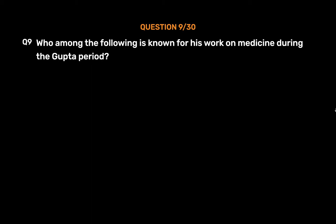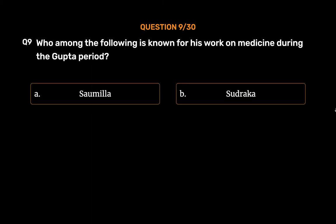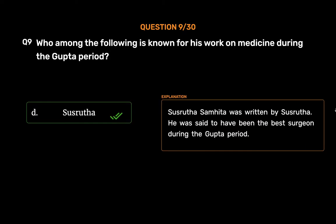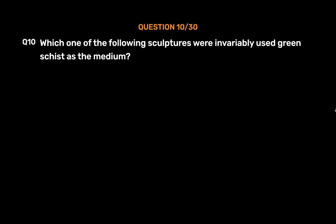Question number nine: Who among the following is known for his work on medicine during the Gupta period? Option A: Saumila, Option B: Sudraka, Option C: Shanka, Option D: Sushruta. The correct answer is Option D, Sushruta. The Sushruta Samhita was written by Sushruta, who was said to have been the best surgeon during the Gupta period.